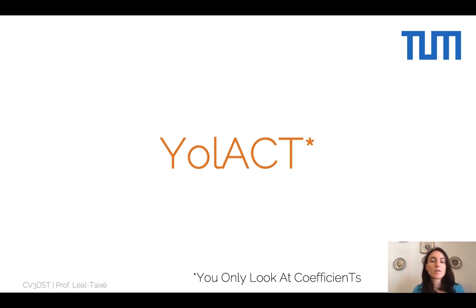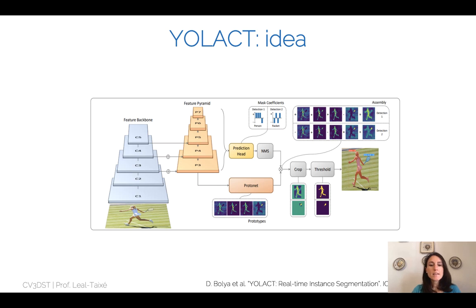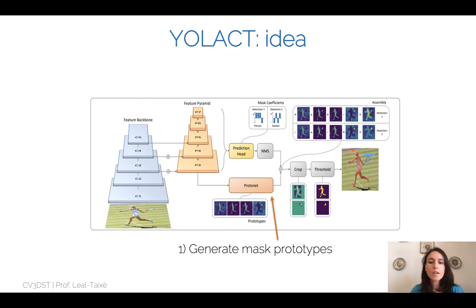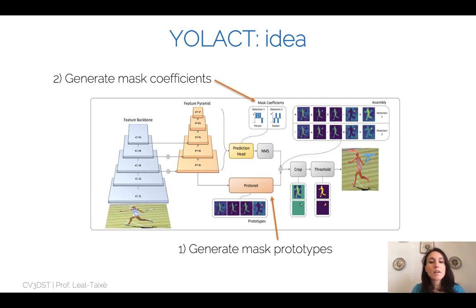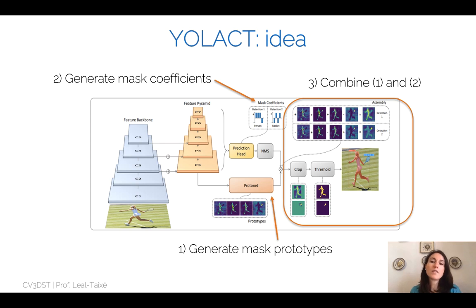YOLACT stands for 'You Only Look At Coefficients.' Going from boxes to masks requires careful network design. The pipeline has three steps: first, a network head generates mask prototypes — possible segmentations for a particular bounding box. Second, the prediction head generates mask coefficients, evaluating each prototype. Third, mask prototypes and mask coefficients are combined to generate the final instance segmentation.